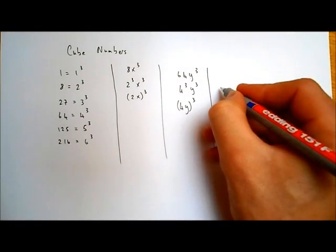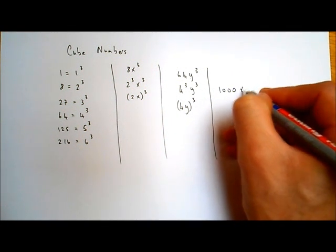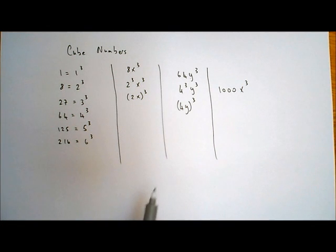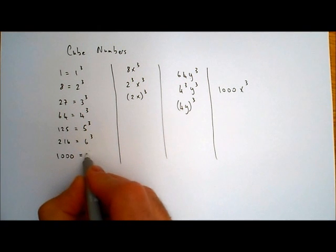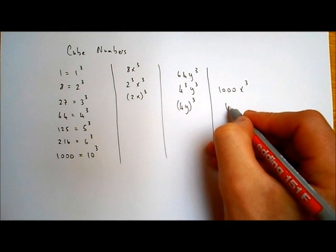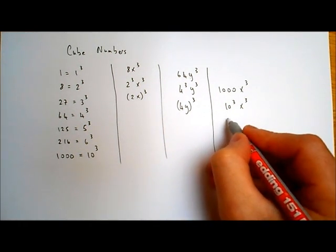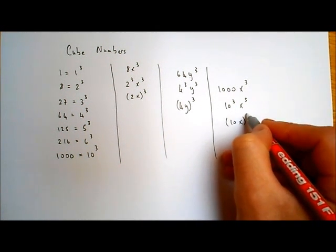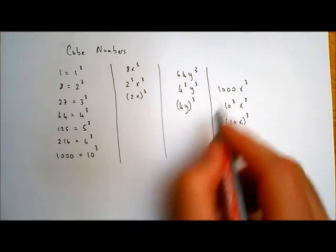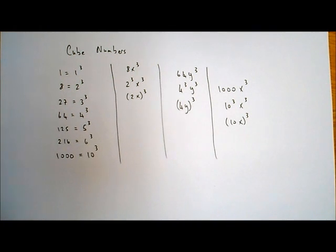Let's have a look at one other example. Let's say we have 1000x³. Well, 1000 is also a cube number because 1000 is the same as 10 cubed — 10 by 10 by 10. So rather than write 1000, I could write 10 cubed, and then I have my x cubed. I can rewrite that in brackets as (10x)³, because 10 by 10 by 10 gives me 1000 and x by x by x gives me x cubed. So these are the cube numbers.